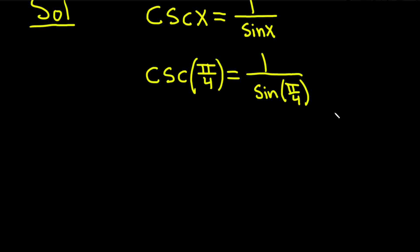The sine of pi over 4 is the square root of 2 over 2. So this is equal to 1 over the square root of 2 over 2.